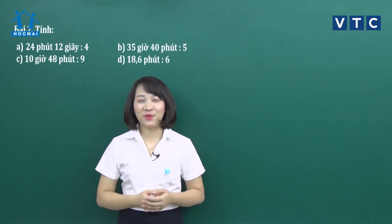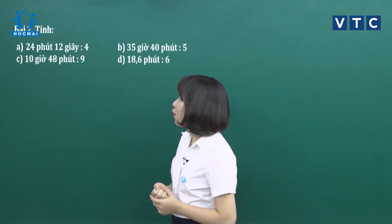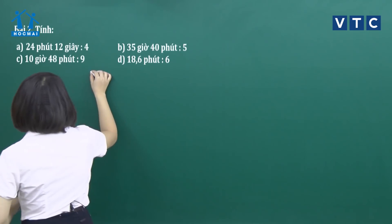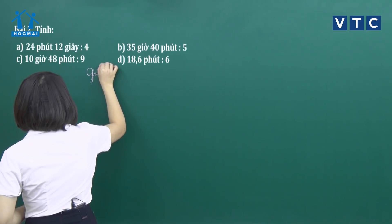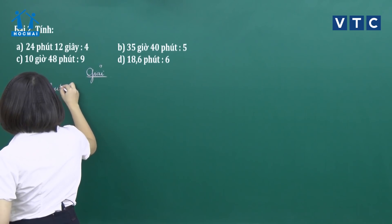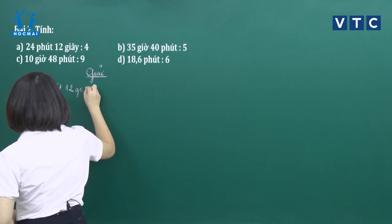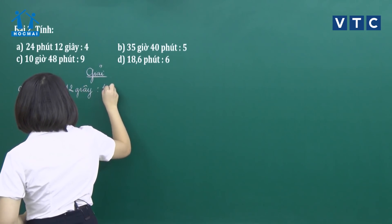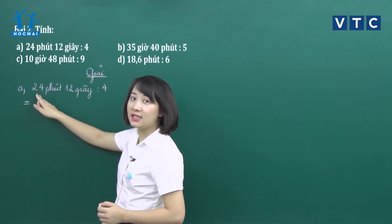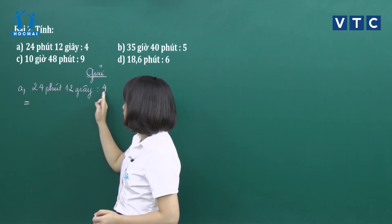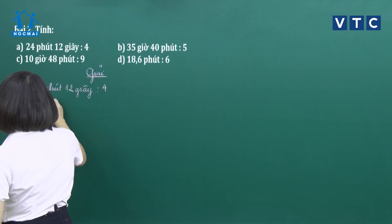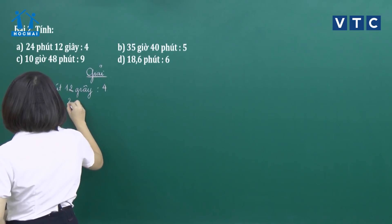Bài tập số 2: chúng ta cùng nhau thực hiện một số phép chia số đo thời gian. Câu A: 24 phút 12 giây chia cho 4. Lấy từng phần của số đo thời gian chia cho 4: 24 chia 4 được 6 phút, 12 chia 4 được 3 giây.